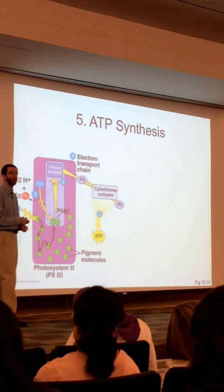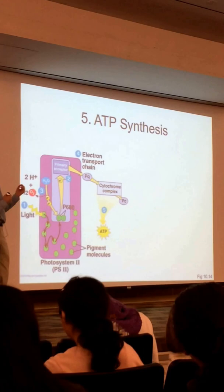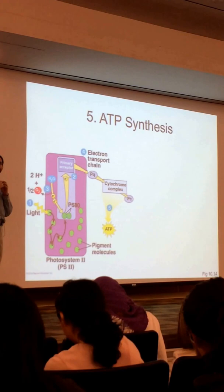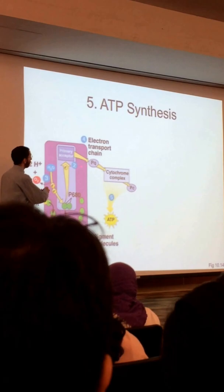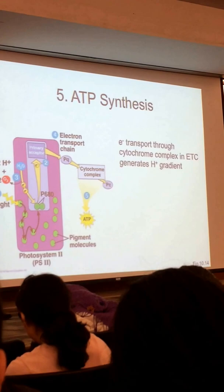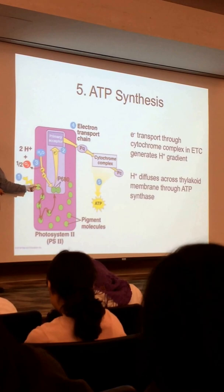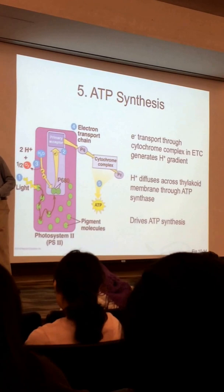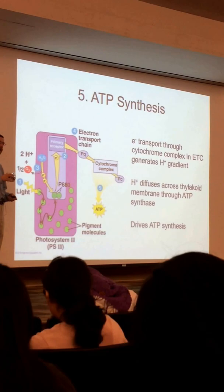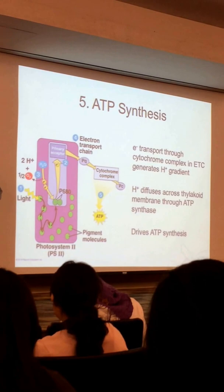Step five: we're making ATP because we've just made a proton gradient using the cytochrome complex. This is very similar to mitochondria — instead of pumping protons into the intermembrane space, we're pumping protons into the thylakoid space. We let those protons diffuse back through ATP synthase, just like during respiration, and in the process we generate a whole lot of ATP. This is where you get the ATP from the light-dependent reactions of photosynthesis.